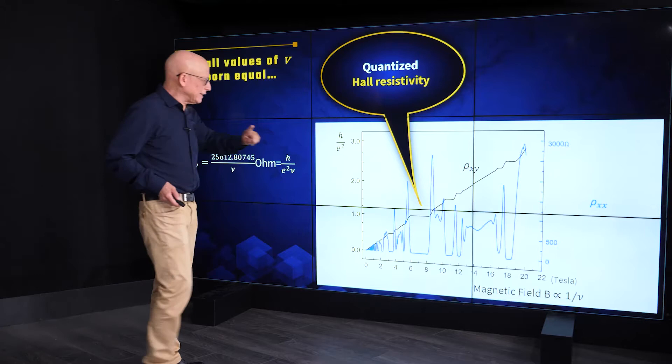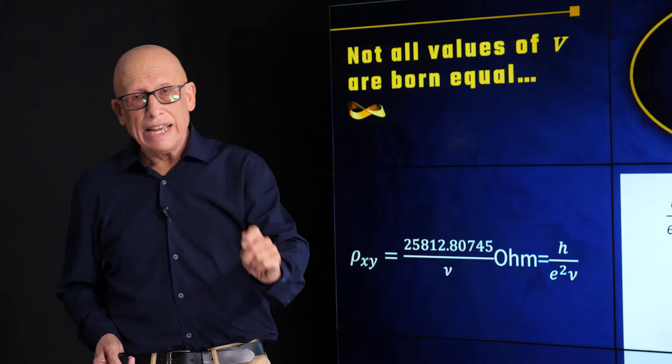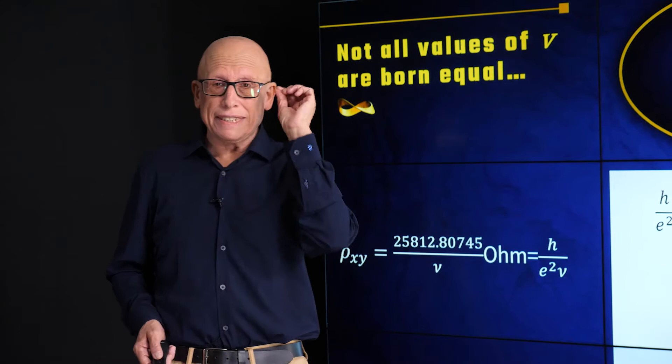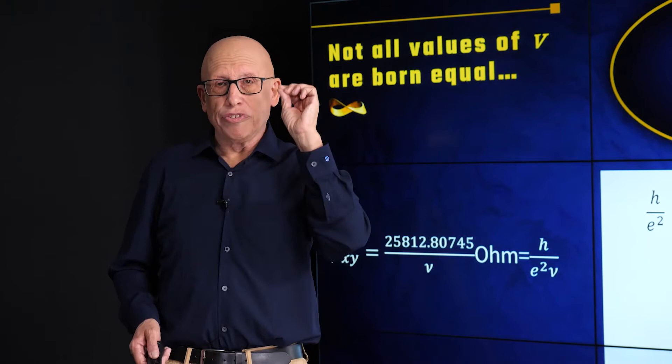But the value of the Hall resistivity at each step is universal and is constant. If you look at the Hall resistivity at the beginning and end of the step, it does not change by 1%, not by 1% of 1%. It is precise to one part to about 10 to the 9, one part in a billion. It is one of the most precise phenomena you've ever seen.